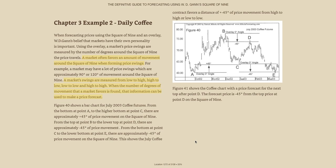As you can see on my screen, we're on Chapter 3 of Patrick Nekula's Definitive Guide to Forecasting using WD Gann Square of Nine. A market often favors an amount of movement around the Square of Nine when forming price swings. Market swings are measured from low to high, high to low, low to low, and high to high. When the number of degrees of movement that a market favors is found, that information can be used to make a price forecast.